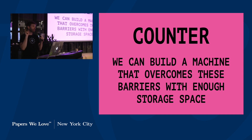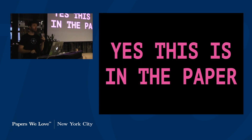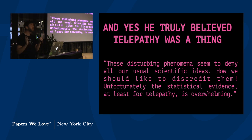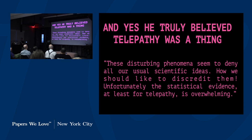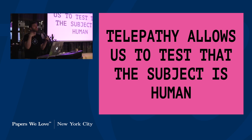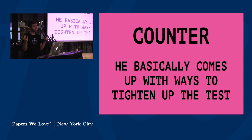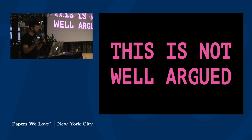There is one last objection: the argument from extrasensory perception. Yes, this is in the paper, and yes, Turing truly believed that telepathy was a thing. He writes: 'These disturbing phenomena seem to deny all our usual scientific ideas. Unfortunately, the statistical evidence, at least for telepathy, is overwhelming.' To him, telepathy would be a way to prove a human is not a machine, because the human could use ESP to get the cards the interrogator is holding. His counter is that there are ways of tying up the test, but it's really badly argued — because, surprise, ESP doesn't exist.